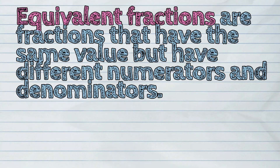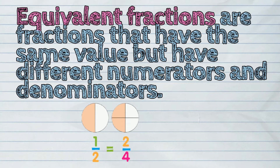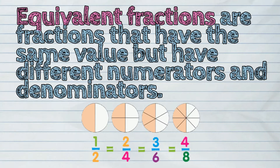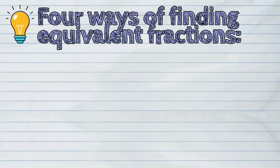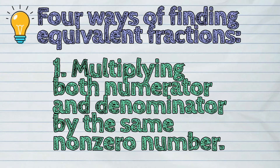Equivalent fractions are fractions that have the same value but have different numerators and denominators. There are four ways of finding equivalent fractions. First is by multiplying both numerator and denominator by the same non-zero number.